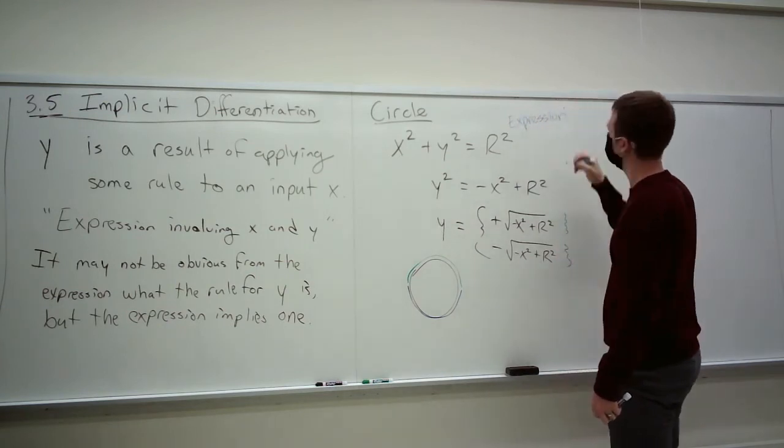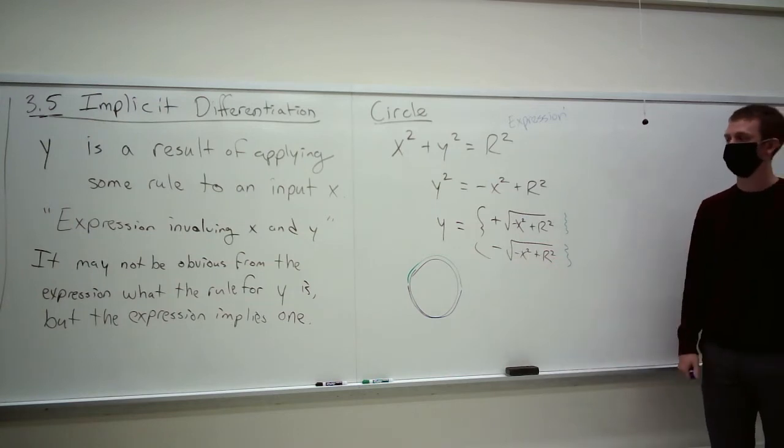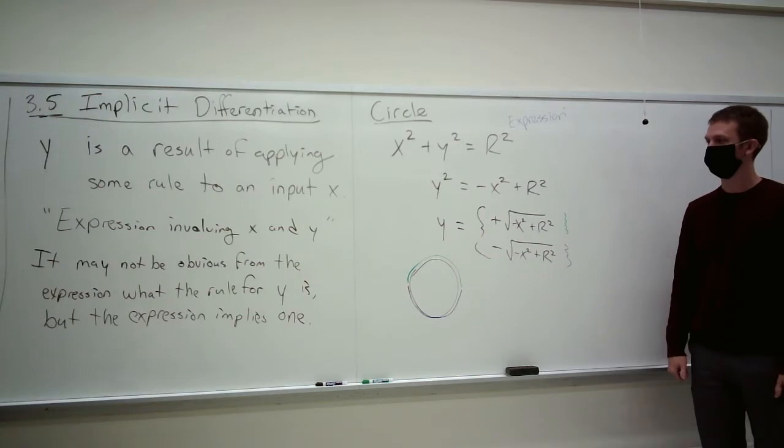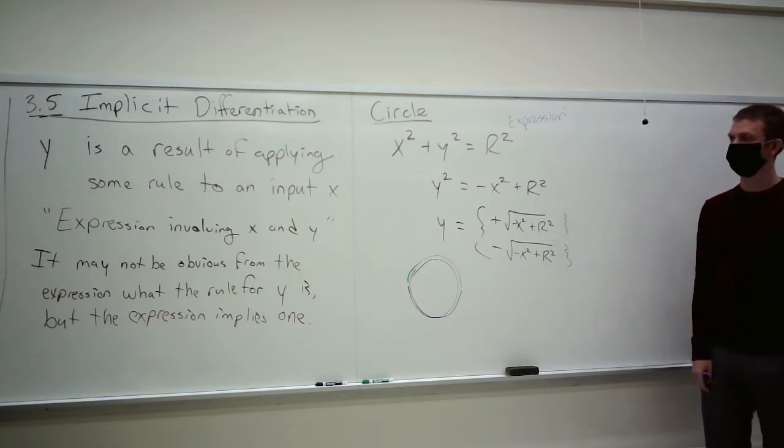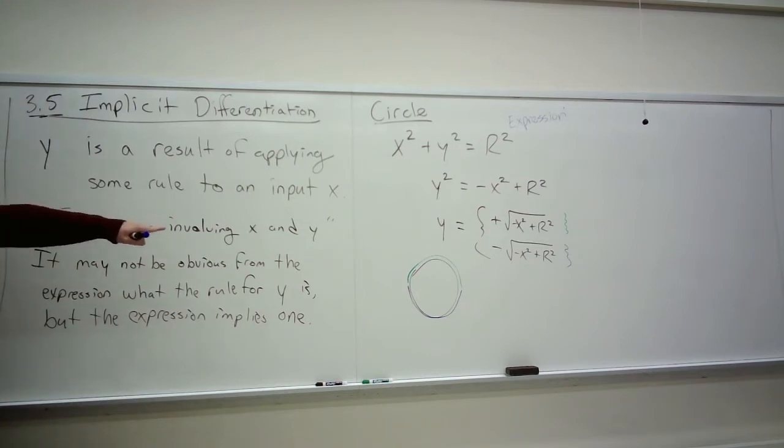I just wrote down what I said. If you're given any expression involving x's and y's, it may not be obvious from the expression what the rule for y is, but the expression does imply one. All right, subtlety, this is the subtlety of mathematics. I write down this expression. I can't say function, because it's not. I write down this expression up here, and it's implied that there is possibly a set of rules which gives us what we're looking at, the circle there, but we don't know exactly which one it is. So this implicit differentiation is going to be a process, it's going to be a technique for finding derivatives of rules which you don't know.